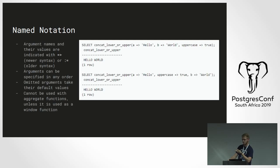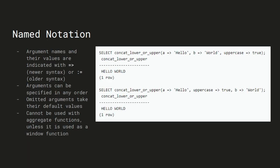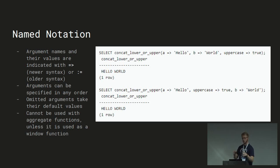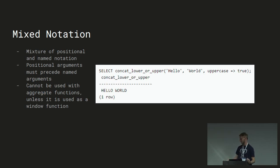There's also named notation, which allows you to use the argument names of the variables in the signature. This is done using the arrow notation with equals and greater-than sign. This allows you to specify arguments in any order you want, which is especially useful if you have very long function signatures with many optional variables. You can also omit arguments, but only from the back. A caveat: named notation cannot be used when calling aggregate functions, unless used in a window function in the current implementation of Postgres. You can also use mixed notation, where positional arguments come first and then you can start naming arguments afterwards. The same caveat applies — you can't use mixed notation in aggregate functions.